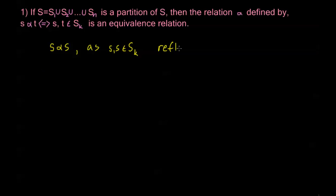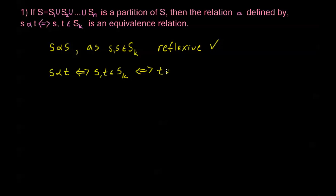This gives us reflexive. Now let's look at symmetric. If I have that s alpha t, I know from the definition of my relation that this is true if and only if s and t are in the same S_k. So then by the same definition, this is true if and only if t alpha s. Loosely said, if s and t are related, that means they're in the same set, so of course t and s are related because they're still in the same set.